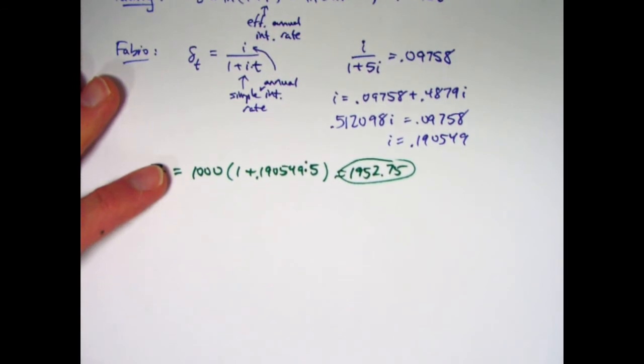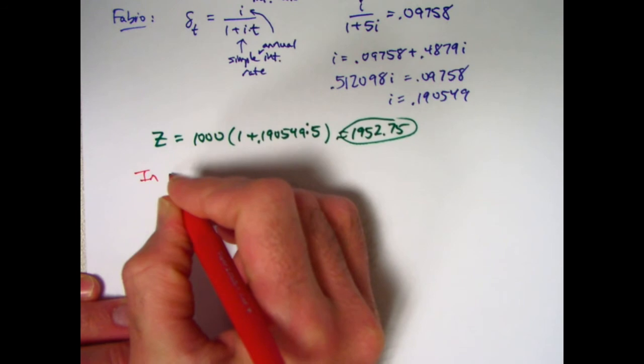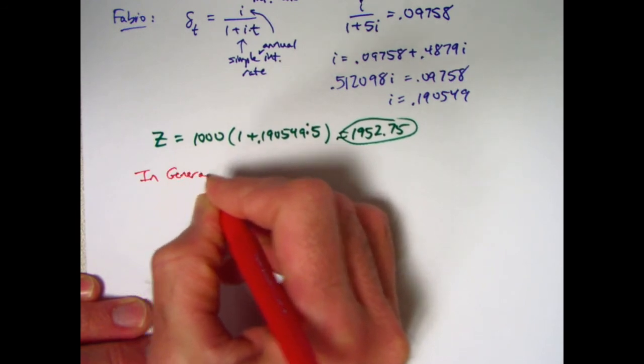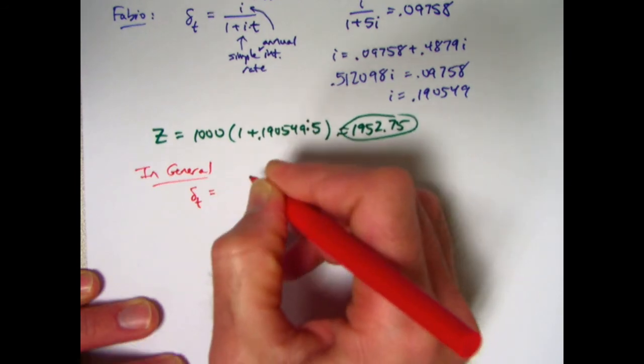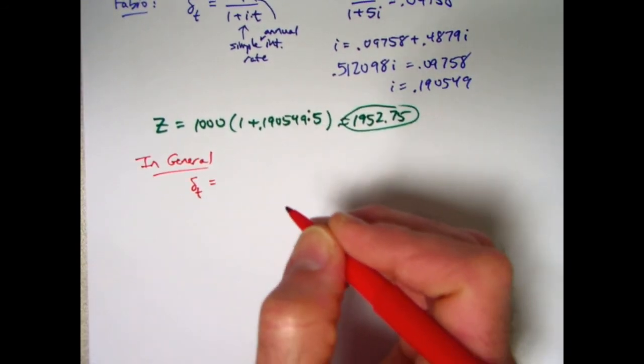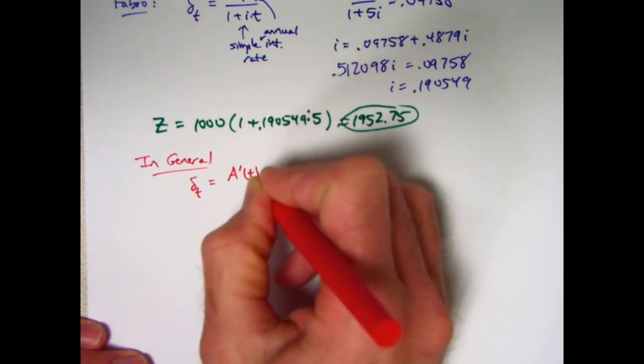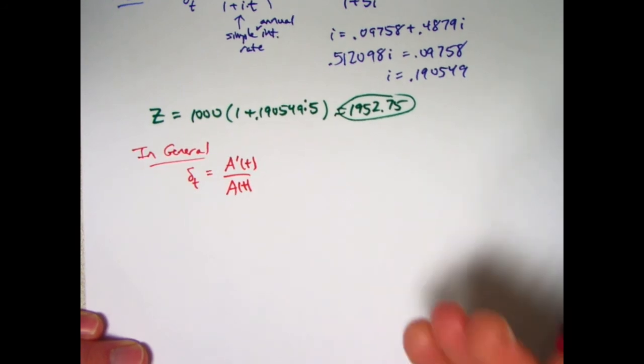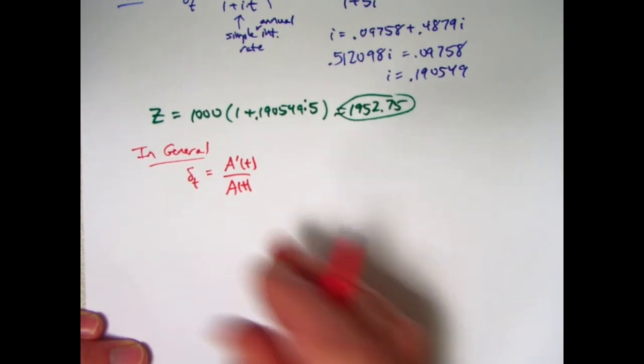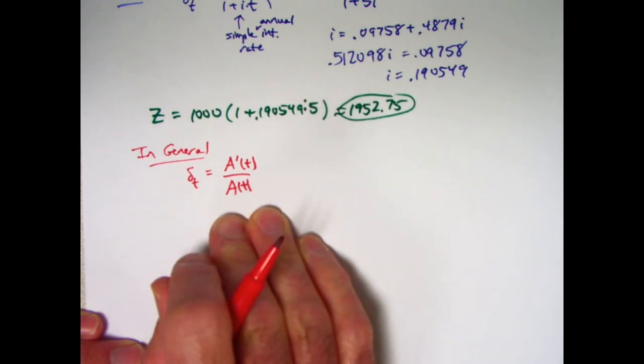It all goes back to the definition of what the force of interest is in general. In general, delta sub T is, if capital A of T is your accumulated amount as a function of time, it's the derivative of that function divided by itself. It's the instantaneous relative rate of change, you might say. A prime would be the instantaneous rate of change. If you're dividing by the current amount, that's the instantaneous relative rate of change.